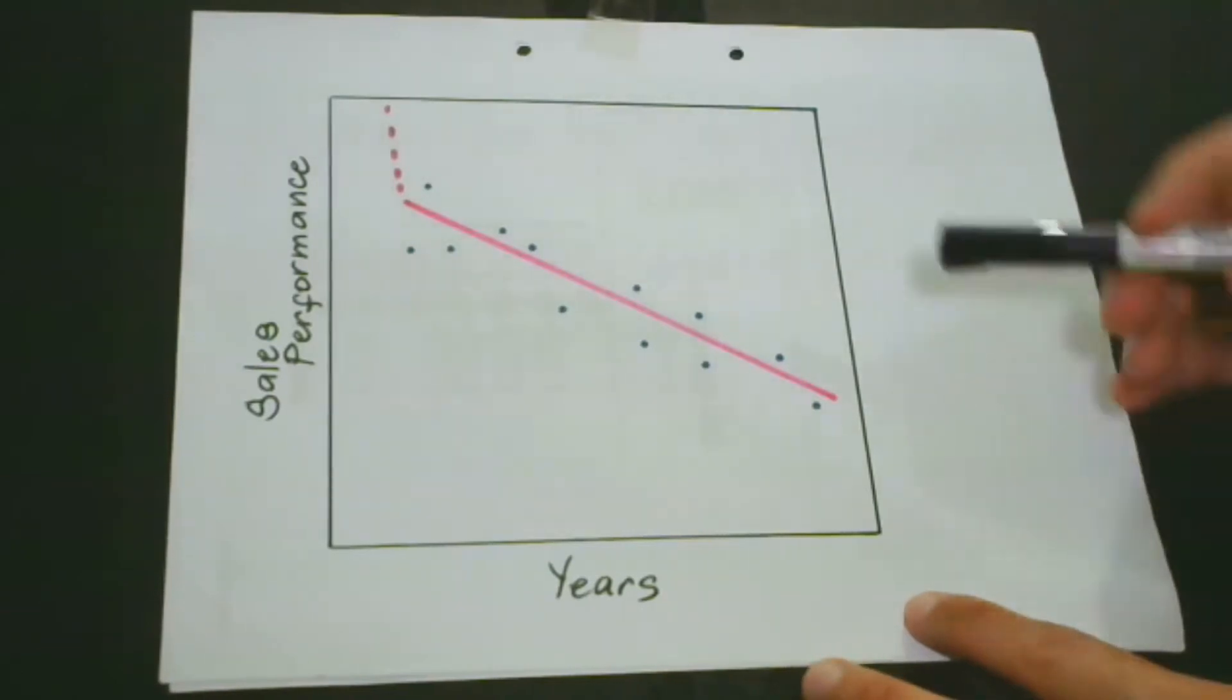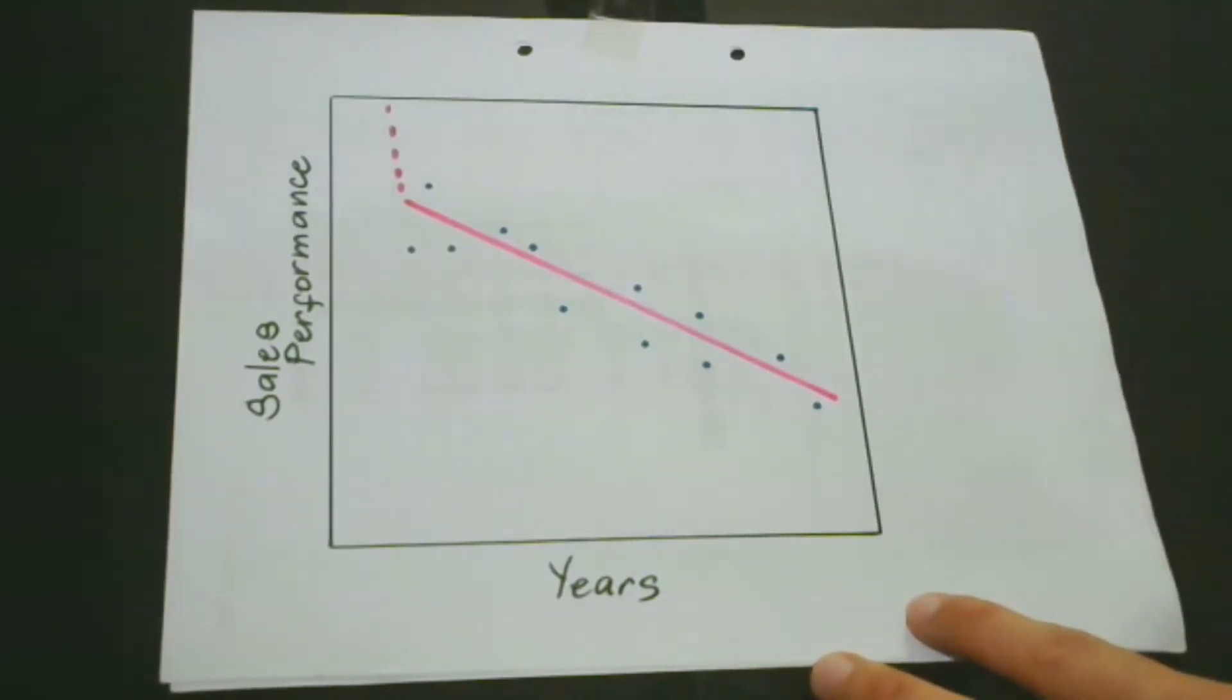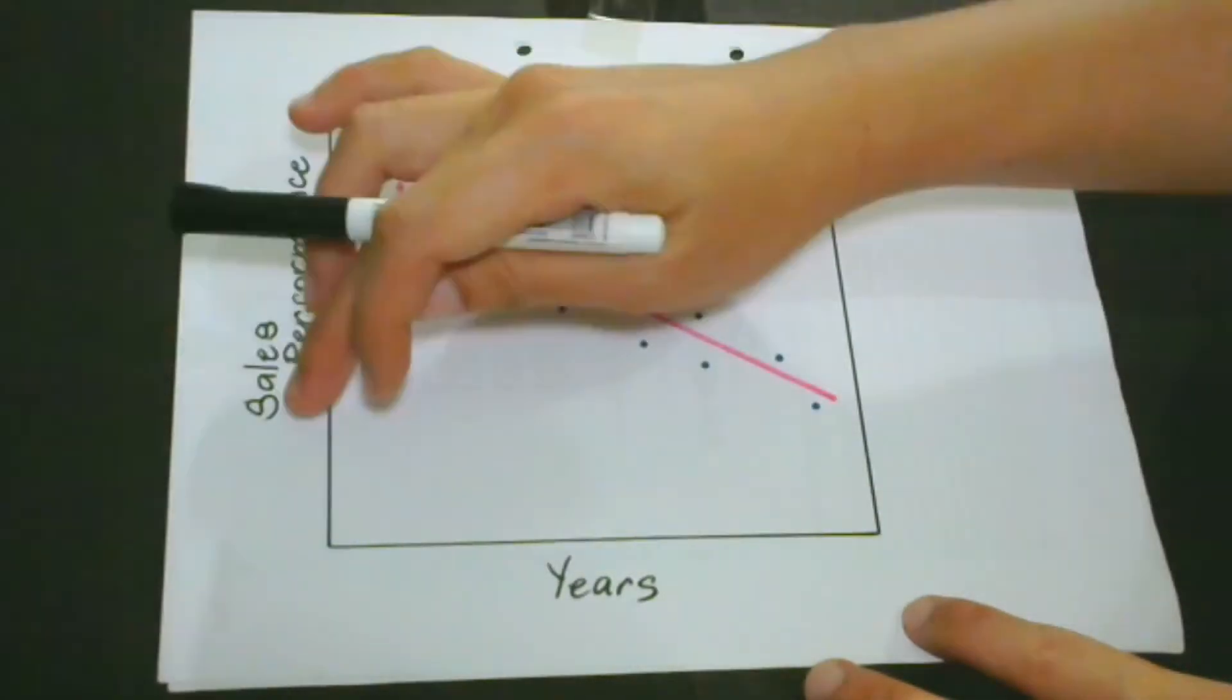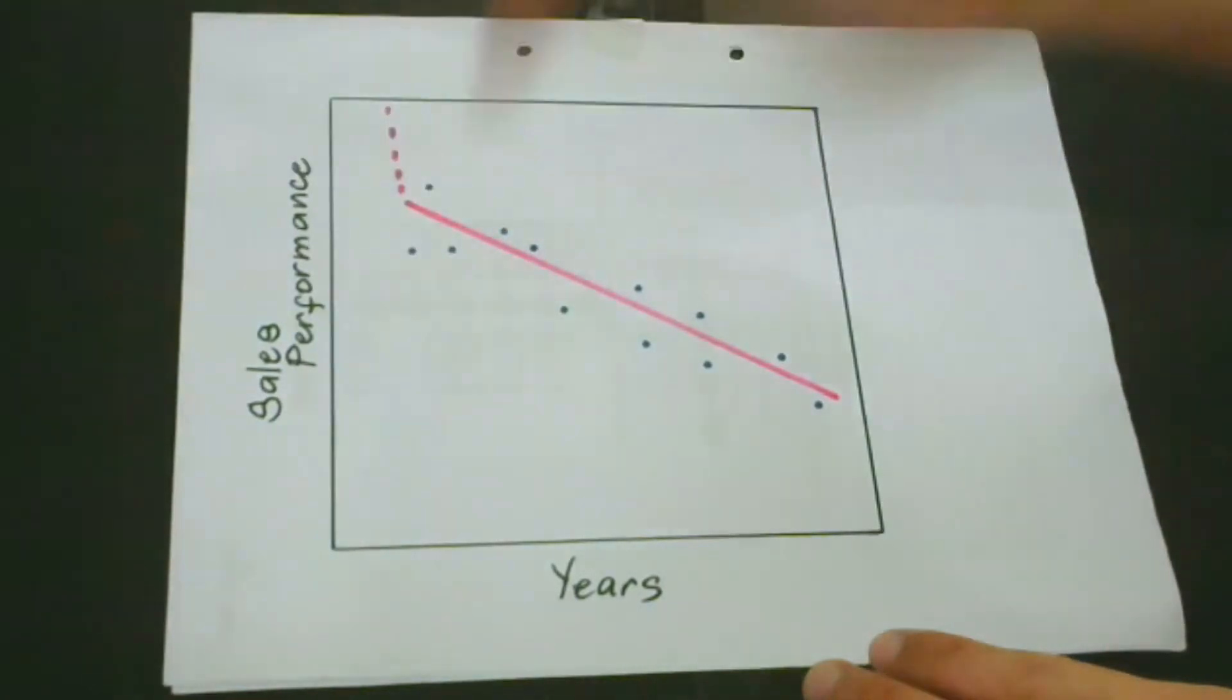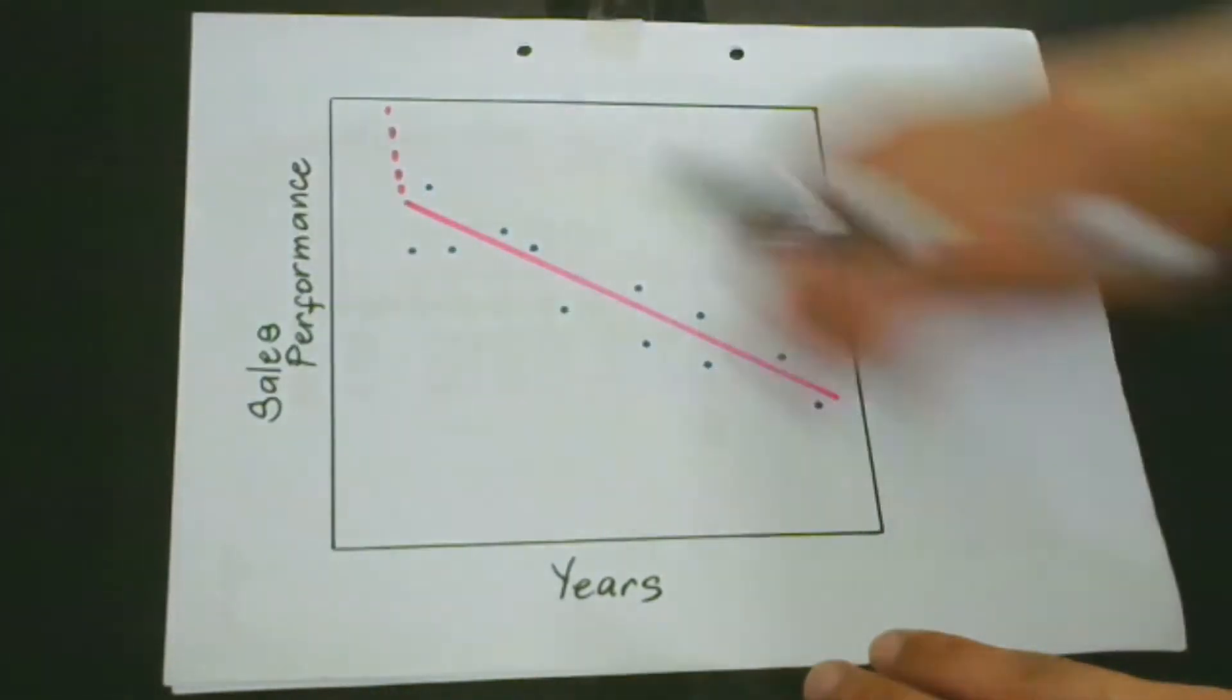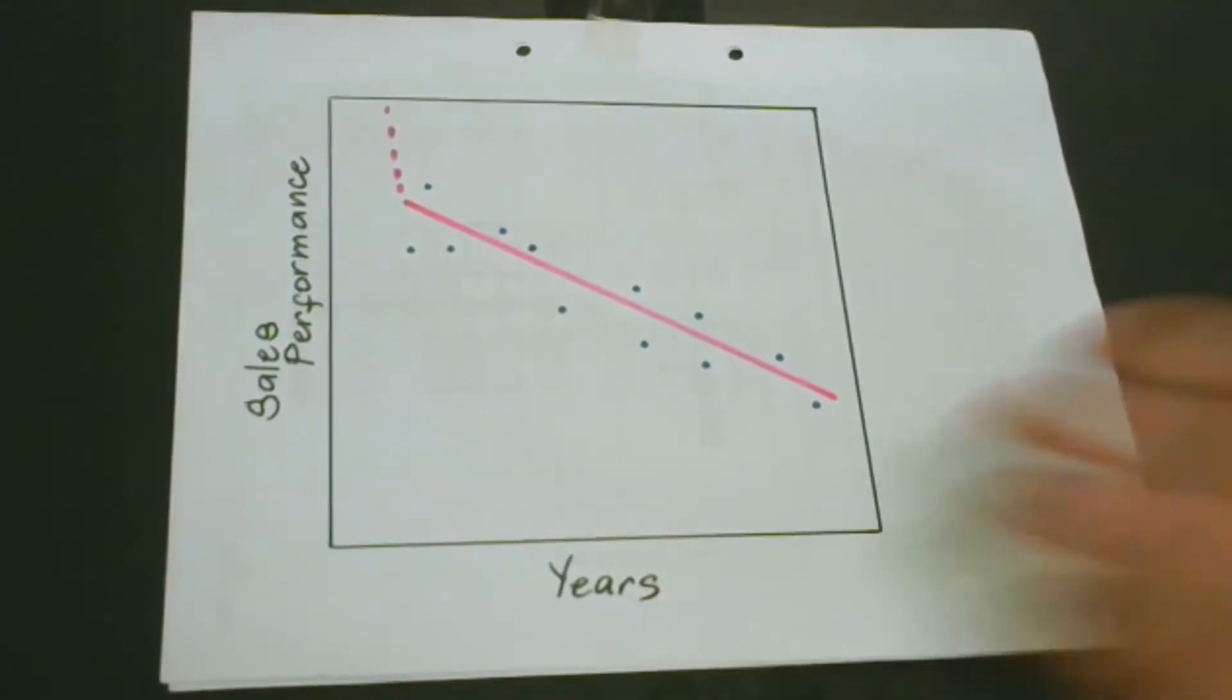Here, we have a linear model that predicts sales performance. The number of years and the sales performance are our two variables. This model predicts the sales performance vis-a-vis the number of years. We can see that the trend is going downward.